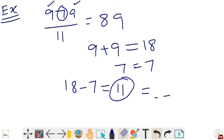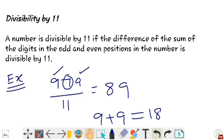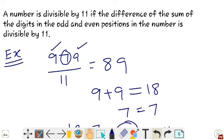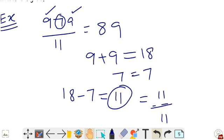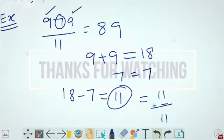So, divisibility by 11: a number is divisible by 11 if the difference of the sum of the digits in the odd and even positions is divisible by 11. Take a number, find the sum of even and odd position digits, subtract them, and if the result is divisible by 11, the number is also divisible by 11. Hope you all understood the divisibility test. We will see another video.